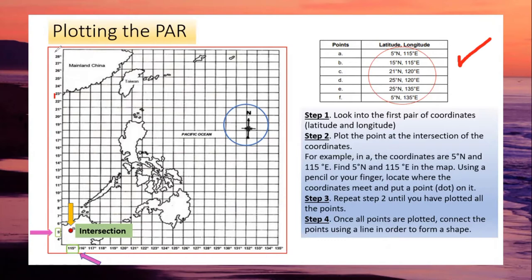Now you have here numbers here on the left side of the map. And actually these ones indicate latitude. So the direction is north. And on the lower part of your map, you can see here the numbers 115 to 135. These are indicating longitude, or the direction is east.